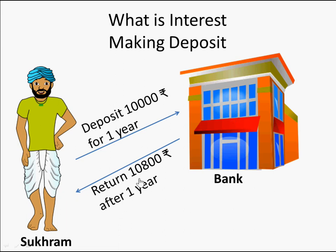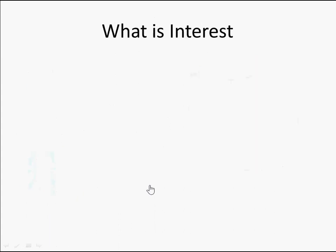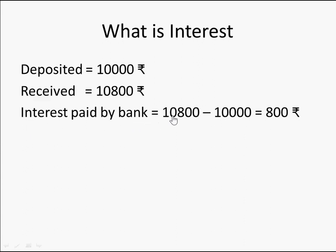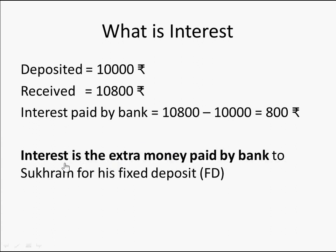So Sukram deposited 10,000 rupees to the bank for one year, and the bank gives him 10,800 rupees after one year. He deposited 10,000 rupees and received 10,800 rupees — so the bank paid him an interest of 10,800 minus 10,000, that is 800 rupees extra for his fixed deposit. In this case, interest is the extra money paid by the bank to Sukram for his fixed deposit. In the deposit case, Sukram's money increased — he received more than he put in.